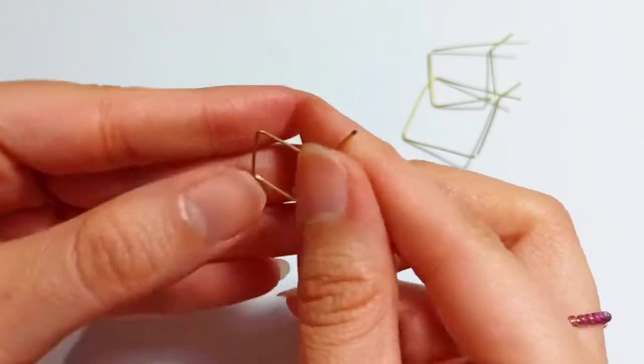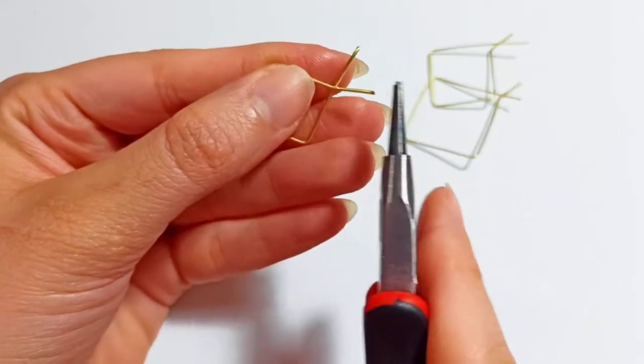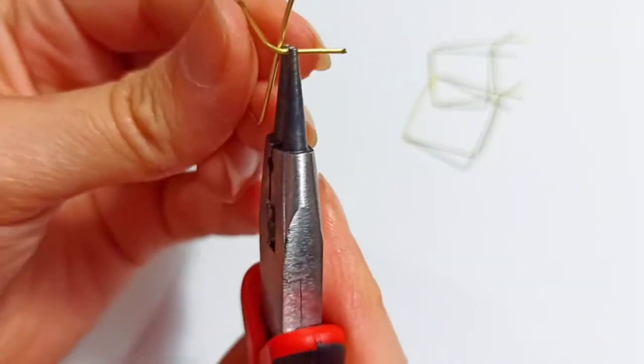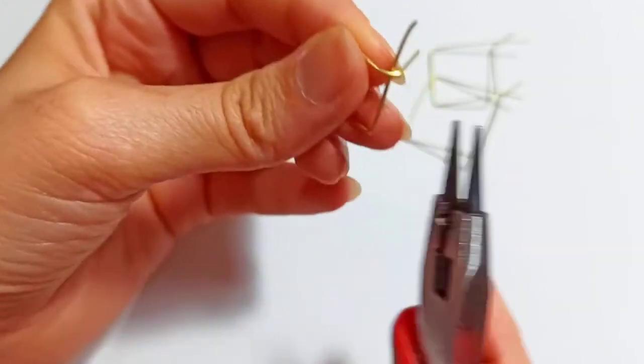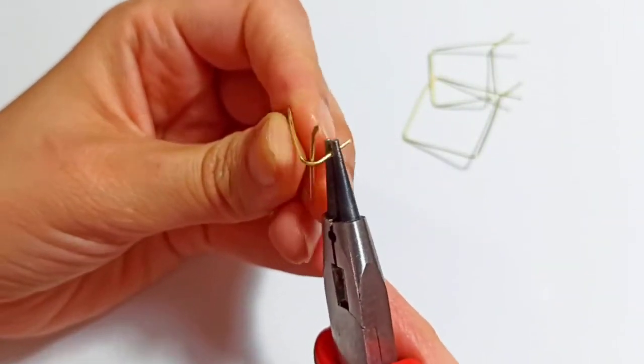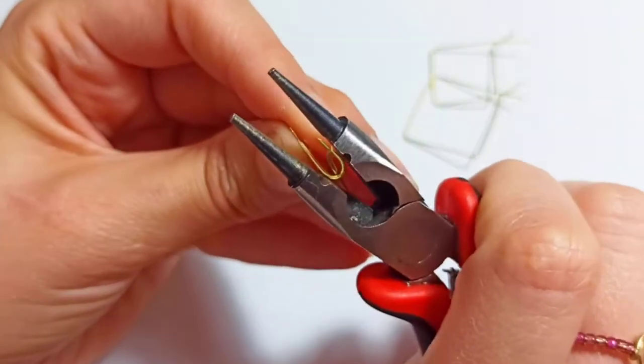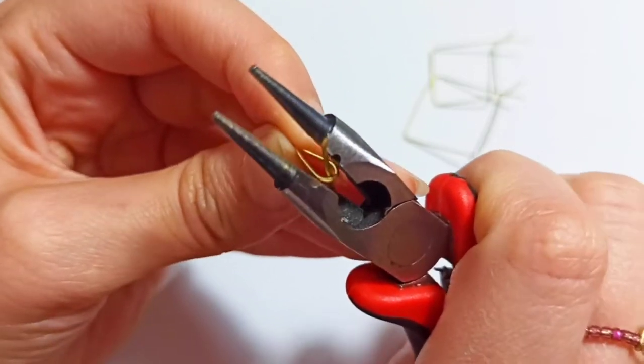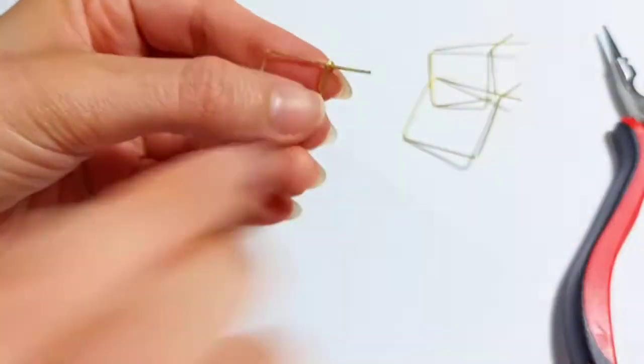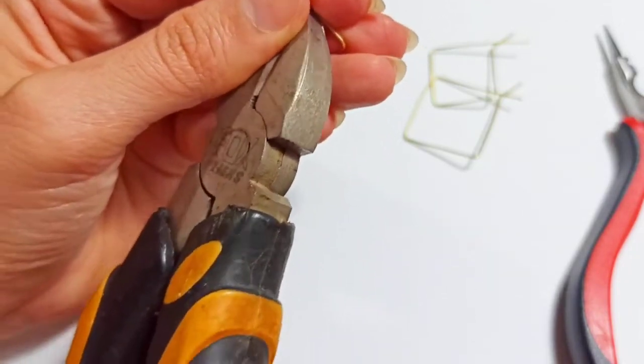We wrap one of these tails all around the other one, making a U-shape just like this, and push it tight with chain nose pliers. Then we cut the extra parts with our wire cutter.